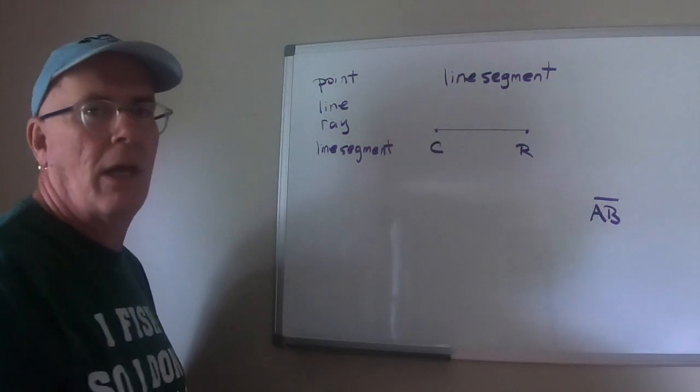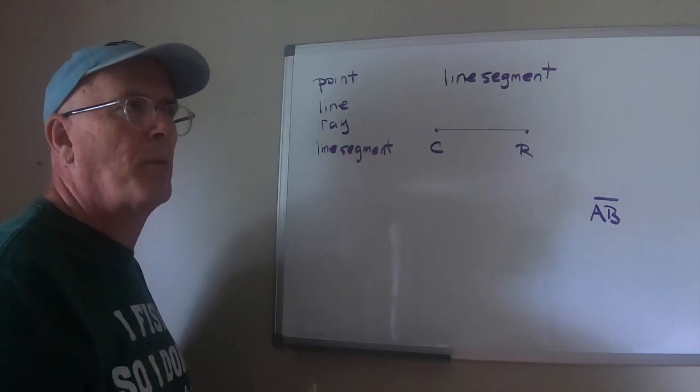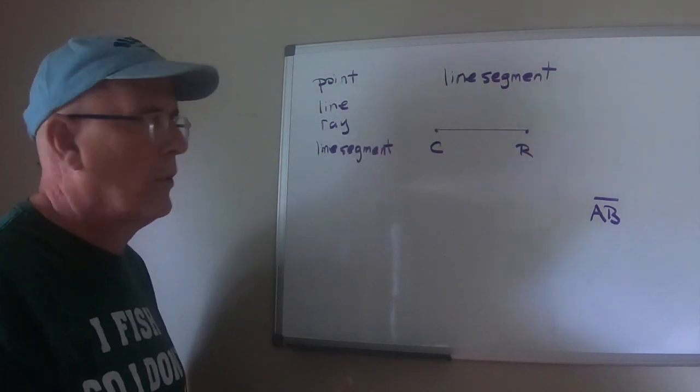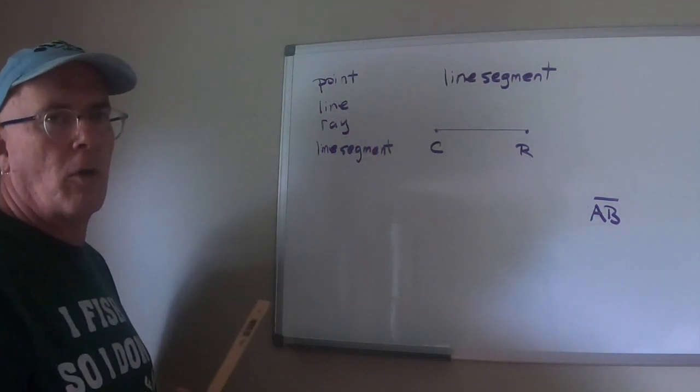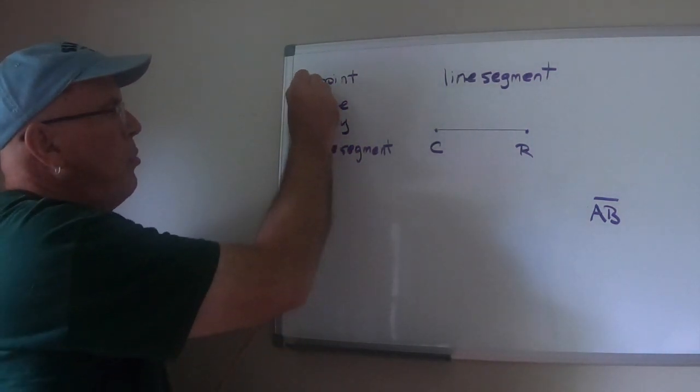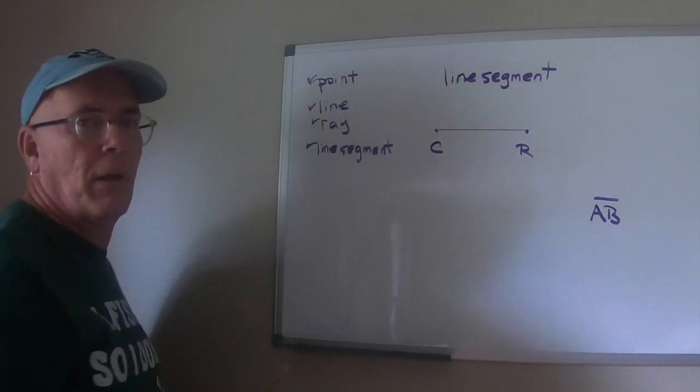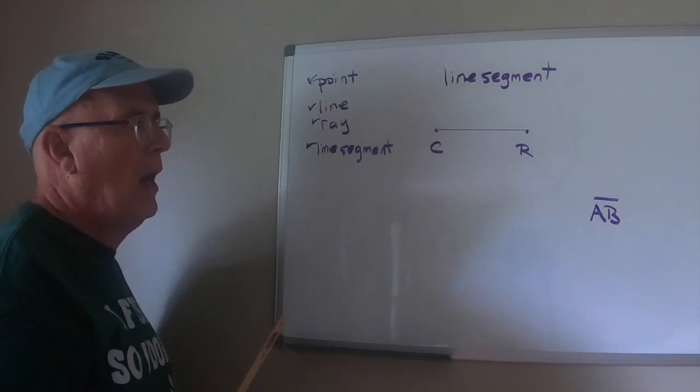We're just labeling points and when we start to look at more complex geometric shapes, that'll be very important. Okay? So, these are our terms that we need to learn. Point, line, ray and line segment. We need to know the difference.